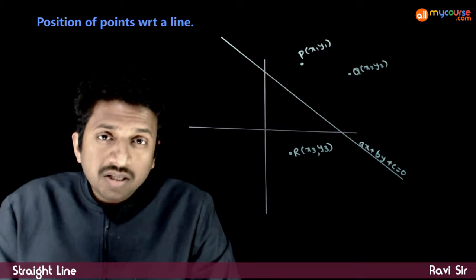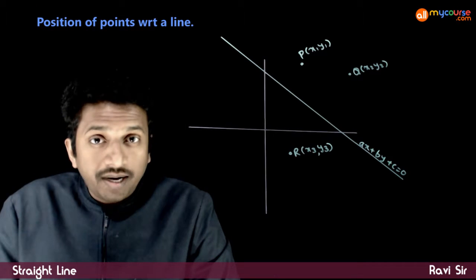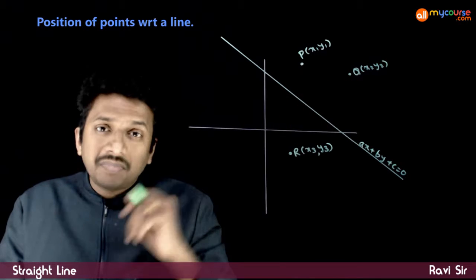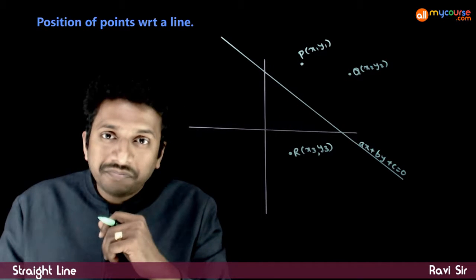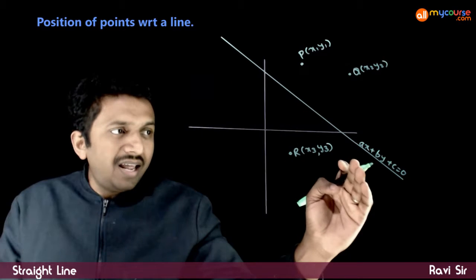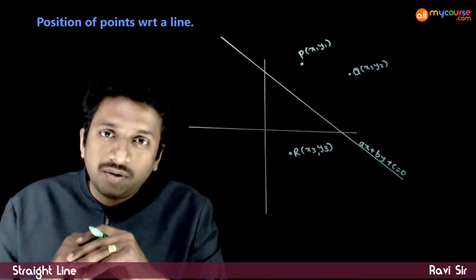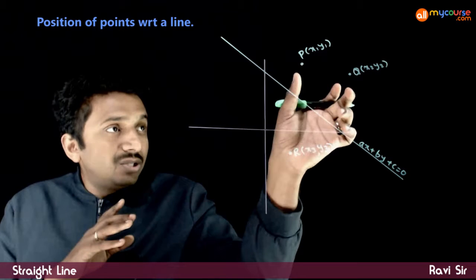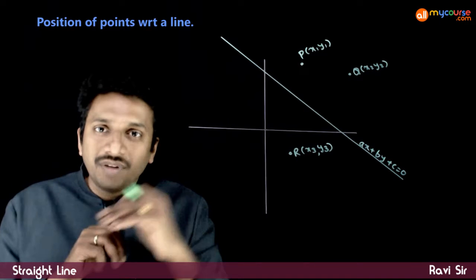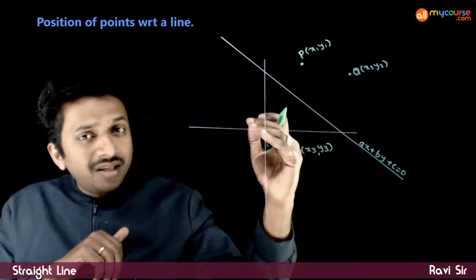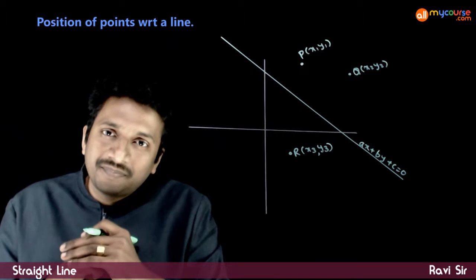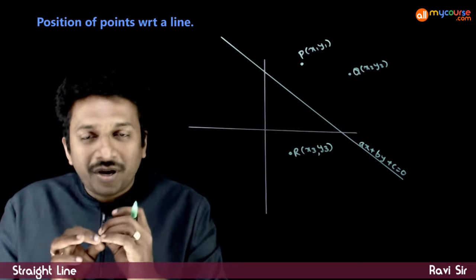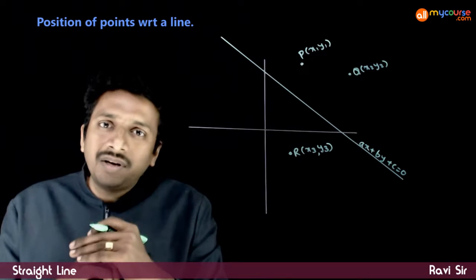Welcome students. In this video, what we are going to look at is: if you are given two points (x1, y1) and (x2, y2) and a line ax + by + c = 0, how will you decide whether these two points lie on the same side of the line or on the opposite sides? The question is: how do you decide the location of points with respect to a given line?